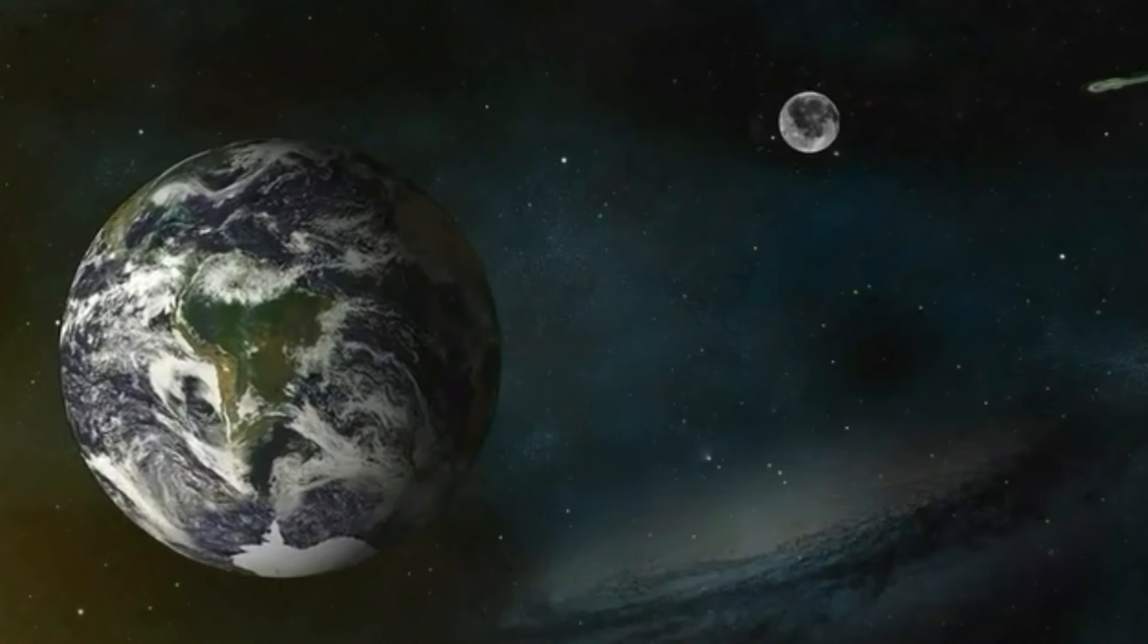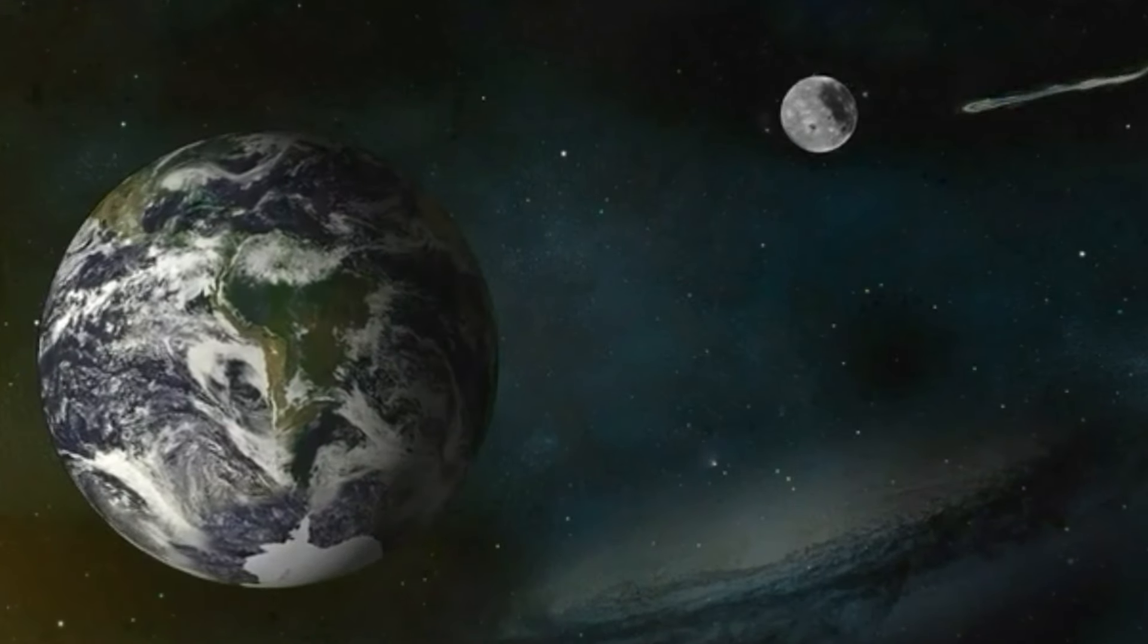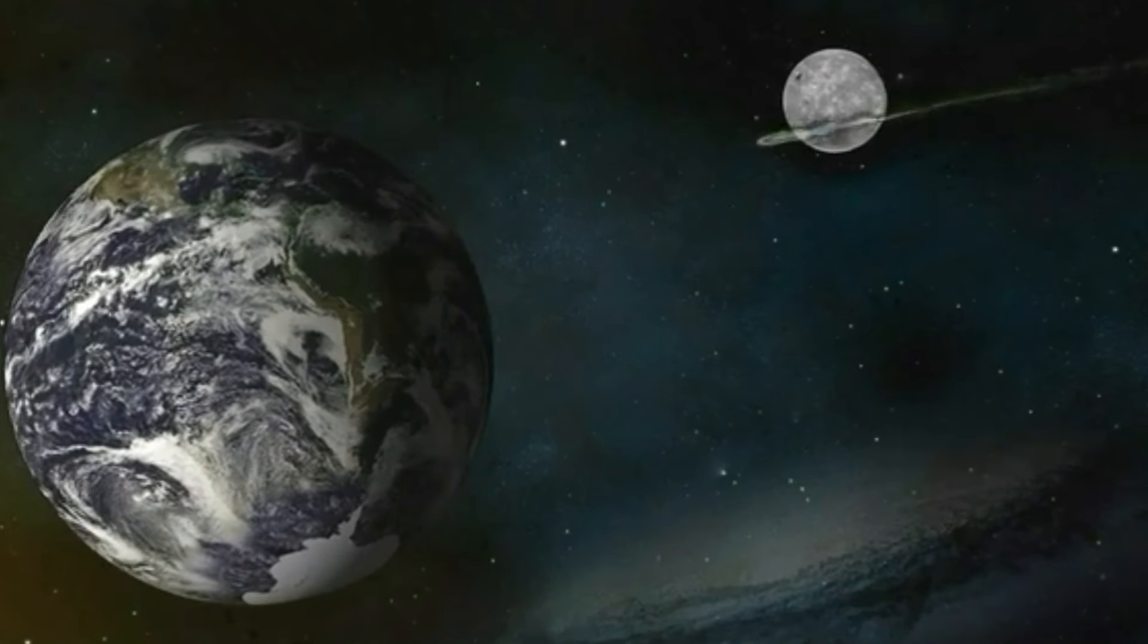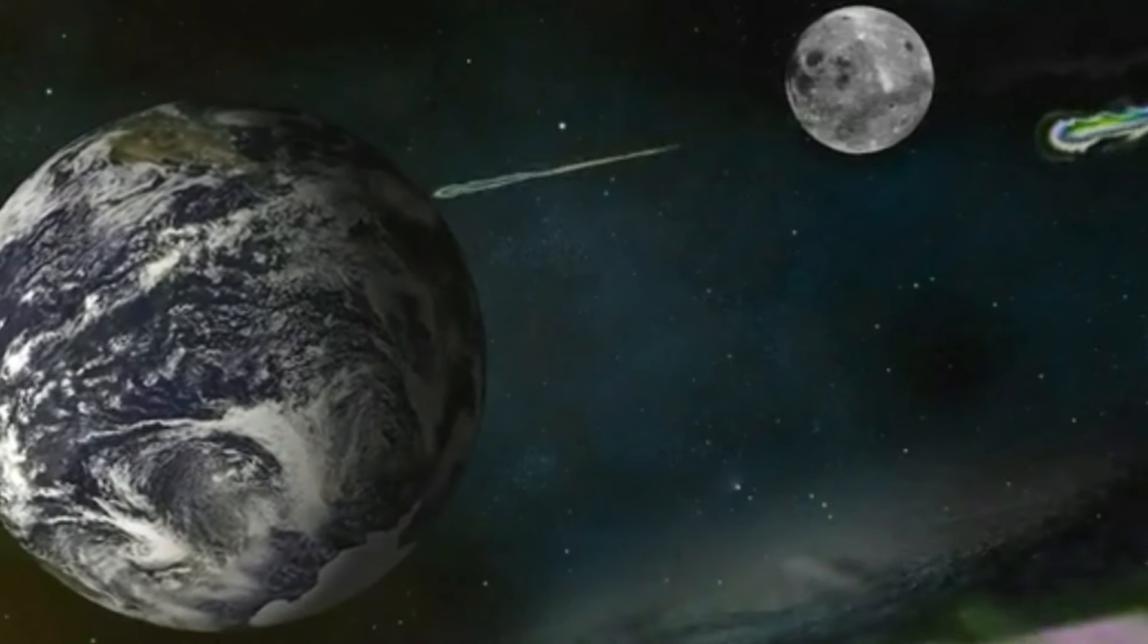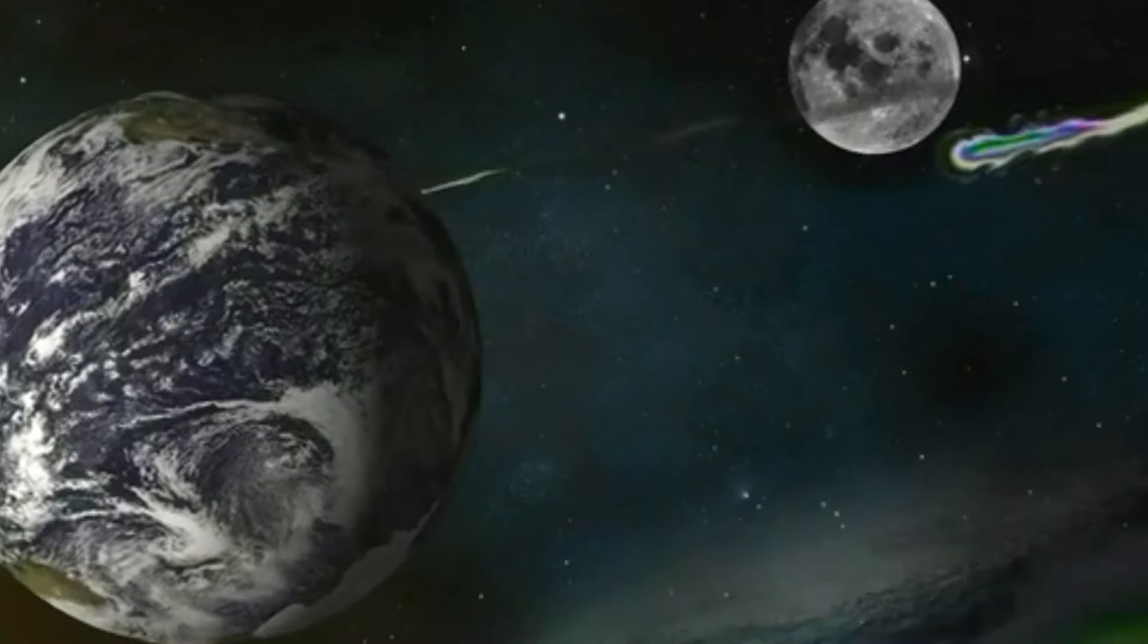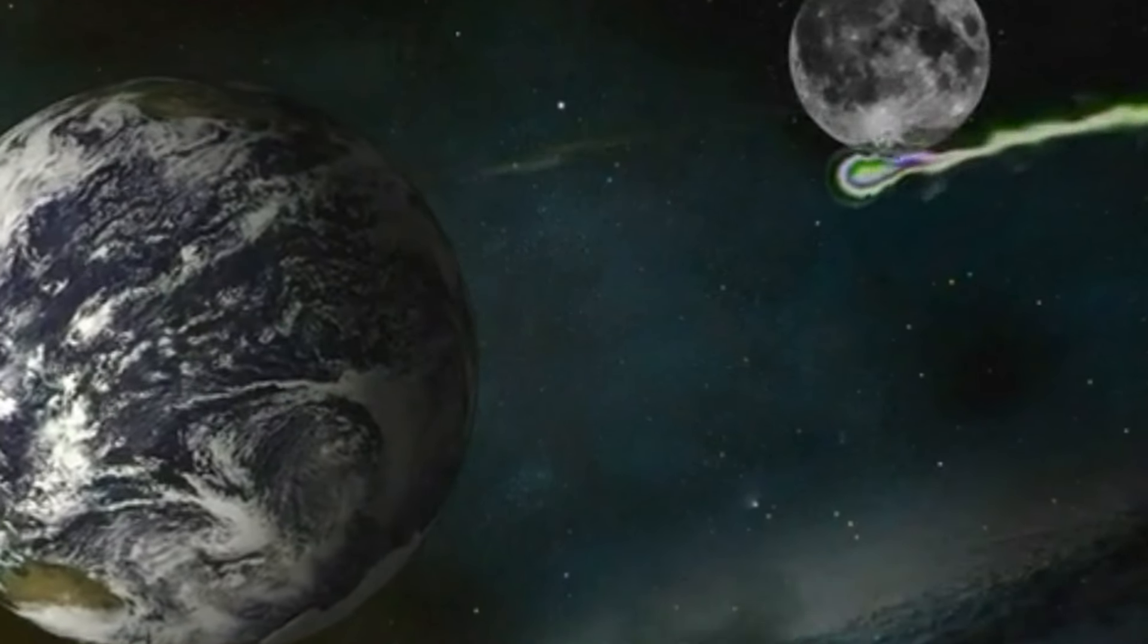Asteroid 2024 MT1 was expected to make its closest approach to Earth in July 2024, passing by at a distance of about 1.5 million kilometers. This is about four times the average distance between the Earth and the Moon.